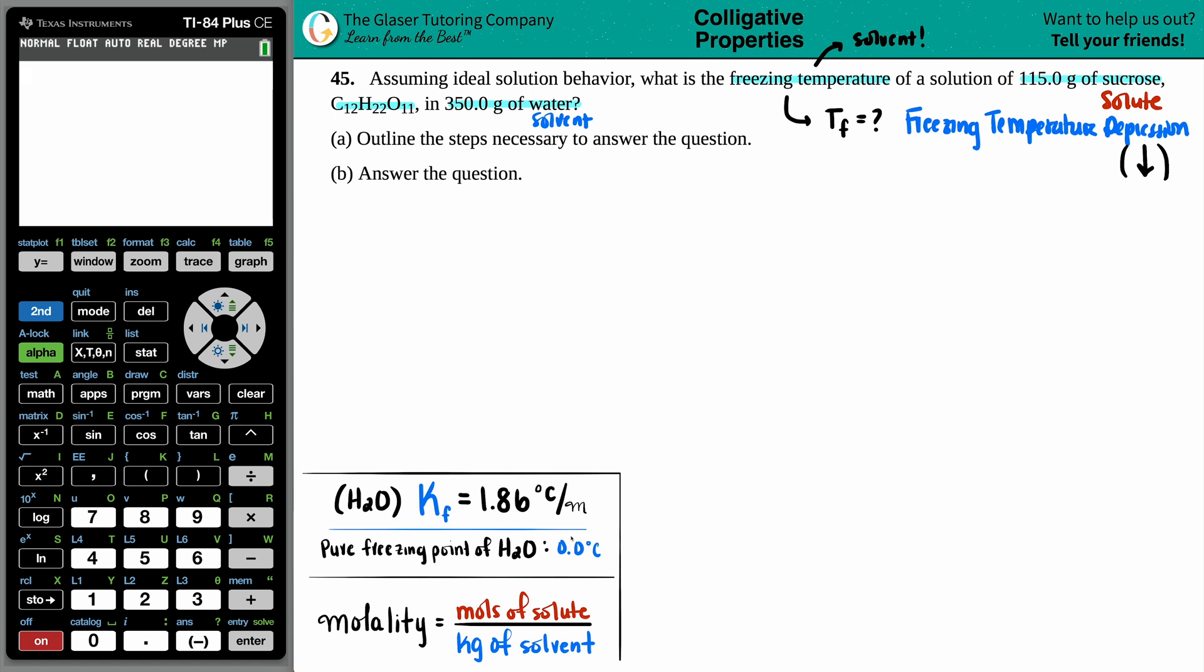What's the formula to find out freezing temperatures for solutions? That's this formula right here. So we'll put it up here. Delta TF, there's a delta here, the triangle. This means it's the change in the freezing point. It is not the actual freezing temperature. It is the change from your pure to the actual one that you have. But that change in freezing temperature equals the KF value.